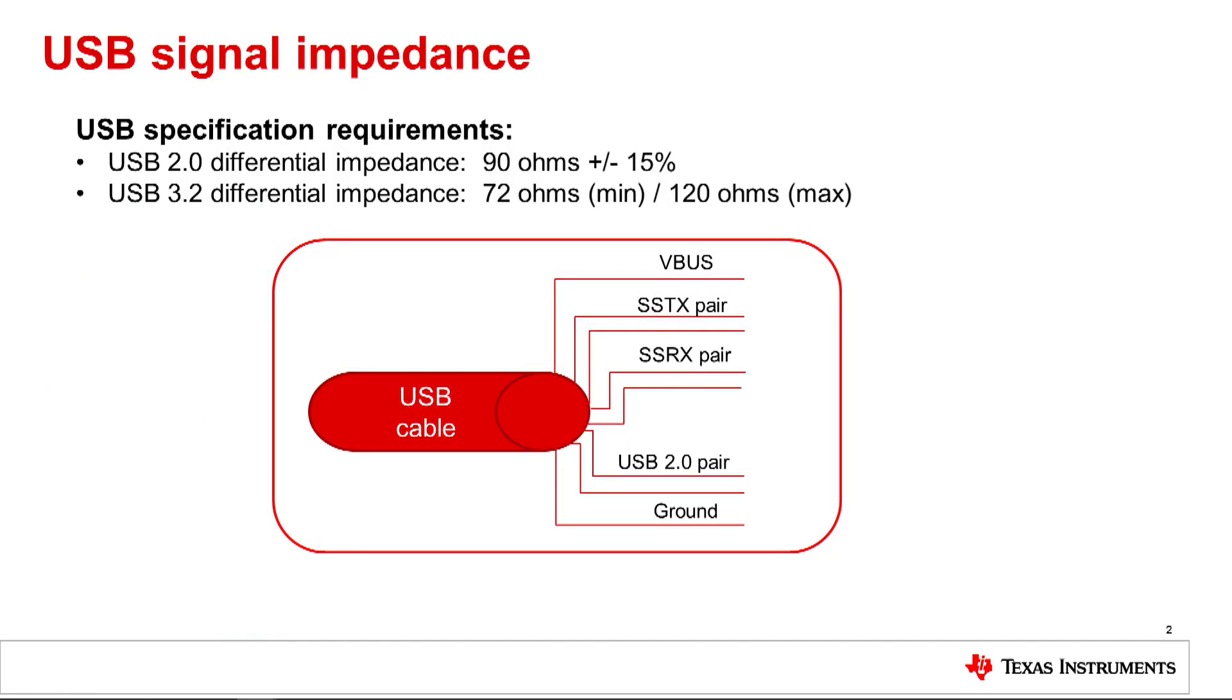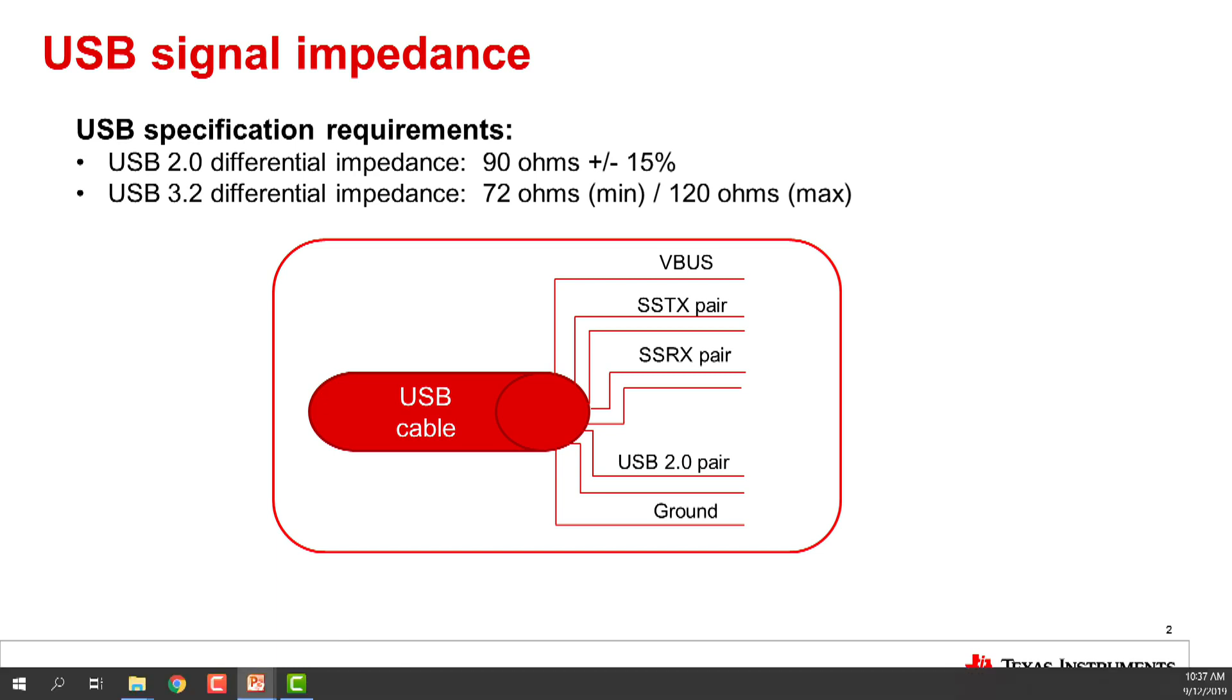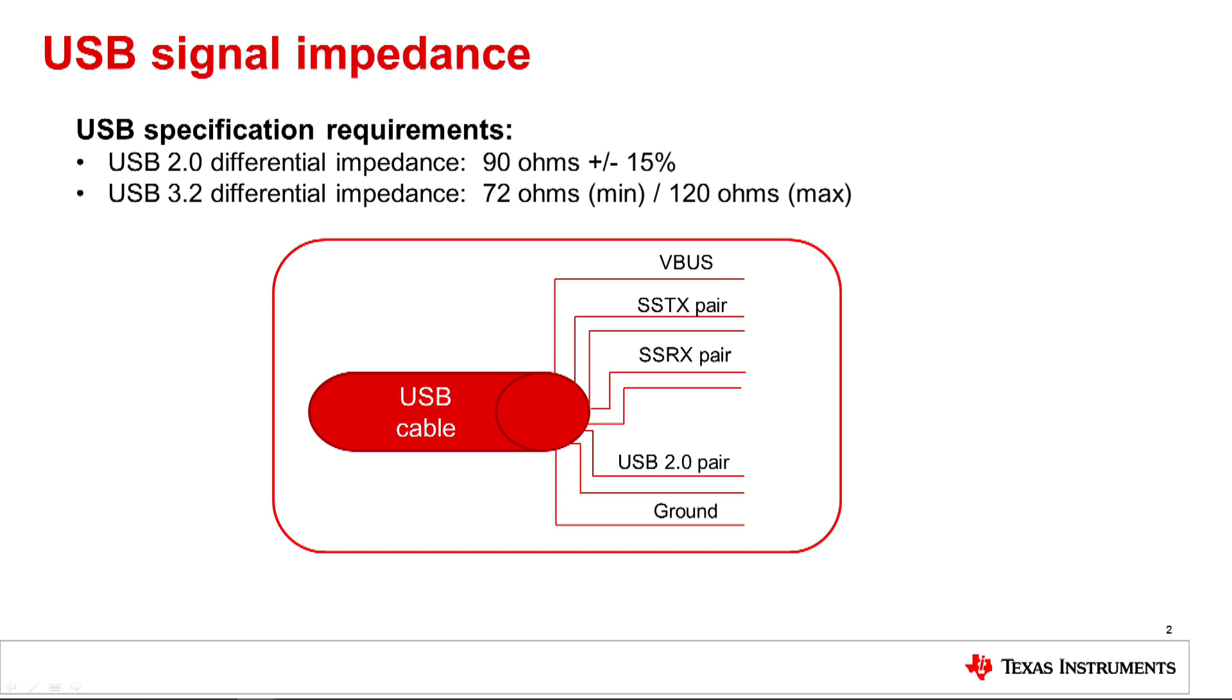In USB, signals are transmitted using differential signaling. USB 2.0 uses a single differential pair of signals, DP and DM. The USB 3 specification adds super speed signaling using two additional sets of differential pairs, SSTX and SSRX, to support a separate full duplex connection. Please note that the USB 3 specification is cumulative, so references to the USB 3.2 spec will apply to the legacy 5G USB 3.0 type connections as well.